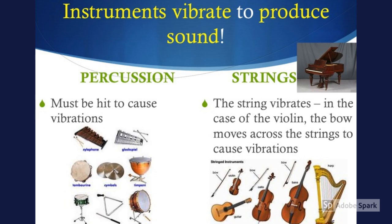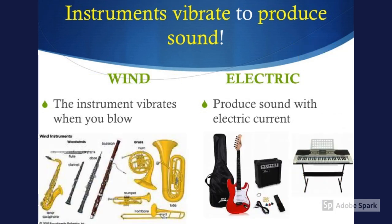Instruments vibrate to produce sound. Percussion instruments must be hit to cause vibrations — xylophone, cymbals, and drums are just a few examples. For string instruments, the string vibrates; in the case of a violin, the bow moves across the strings to cause vibrations. Piano is also a string instrument. In wind instruments, the instrument vibrates when you blow; the flute or clarinet are just a few examples. For electric instruments, they produce sound with electric current.